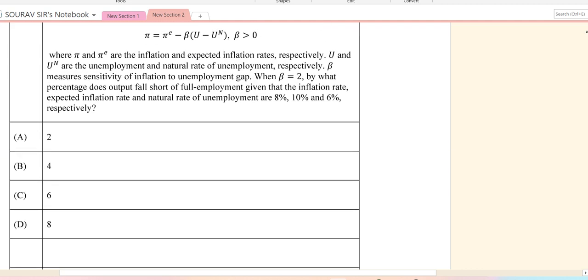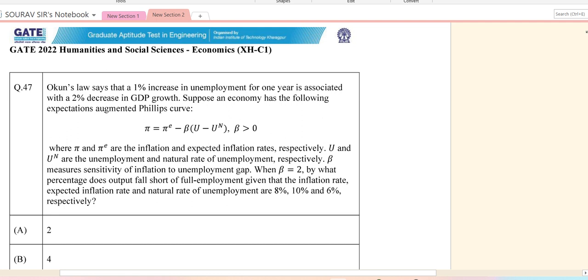Question 47 now. This is an Okun's law related question. Okun's law says that a 1% increase in unemployment in one year has its effect on the economy.